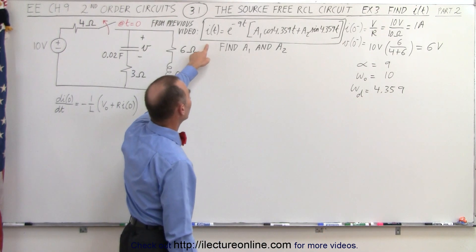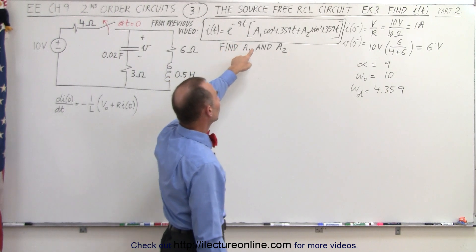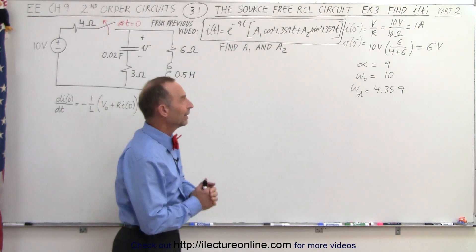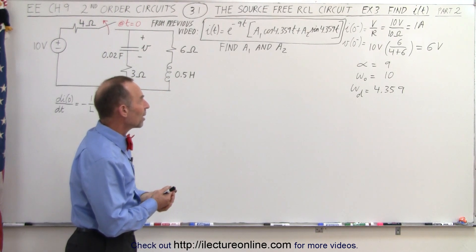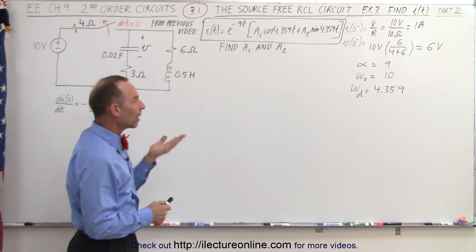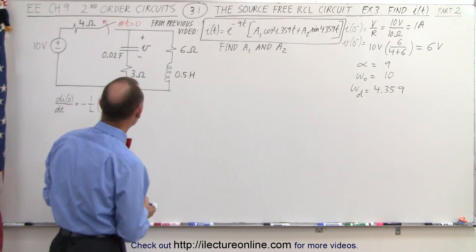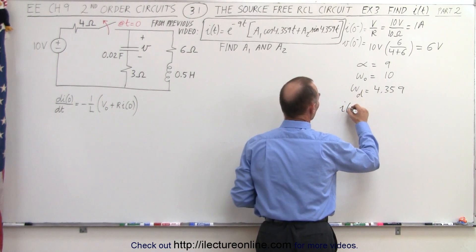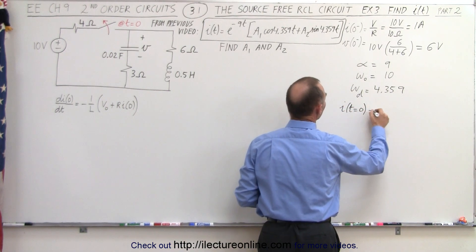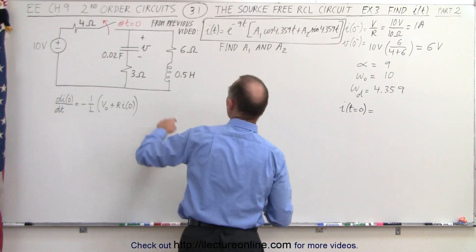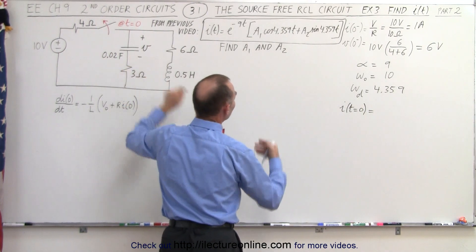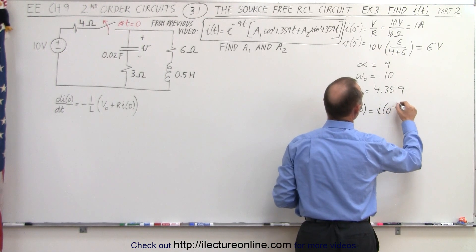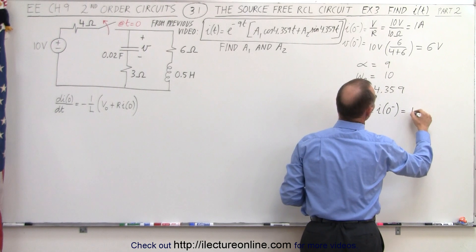We also found the current as a function of time, with the only exception being that we did not yet find the values for the constants a1 and a2. So what we need to do now is find those values. We want to start by asking: what is the current at t equals zero? The current i when time is equal to zero should equal the current in the circuit just before time equals zero, which is i at t equals zero minus, equal to 1 amp.